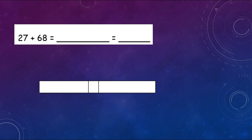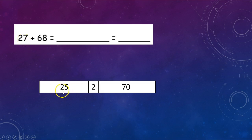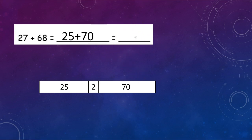Do this one on your own. Remember, we need to change the one that is closest to the next 10, and we would probably change the 68 to the next 10. We needed 2 more to change 68 to 70. So I put 70 here and added 2, which means I need to take away 2 from 27, changing it to 25. So the new number sentence is 25 plus 70, which equals 95.